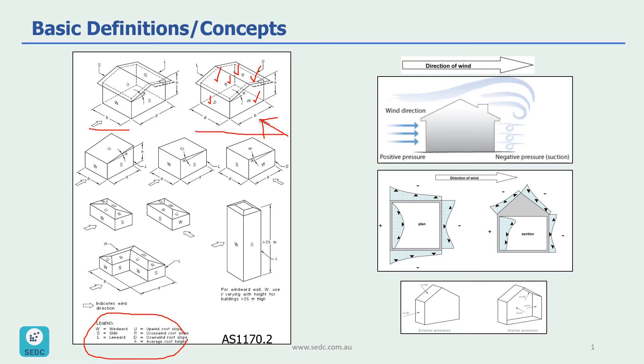In this example here, with the wind blowing in this direction, this side of the roof is called upwind roof slope, and the other side of the roof is called downwind roof slope.